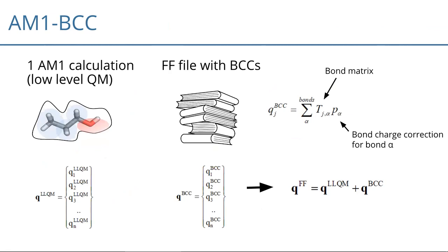In the AMBER family, partial charges have been treated as swappable, which is not strictly correct. The BCCs give a set of handles to tune against empirical data, unlike RESP — aside from the delta parameter introduced here. From experience looking at many charge sets, RESP charges can sometimes be a bit odd while BCCs are more consistent.